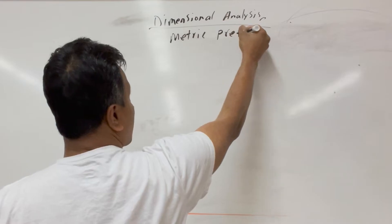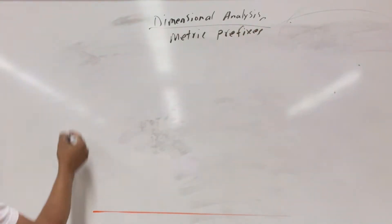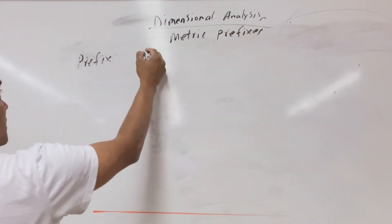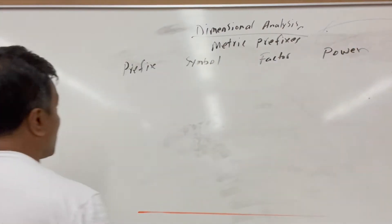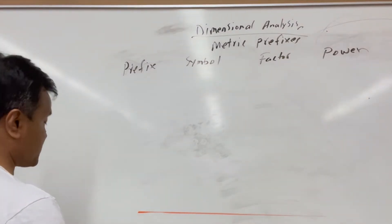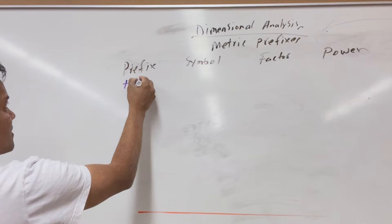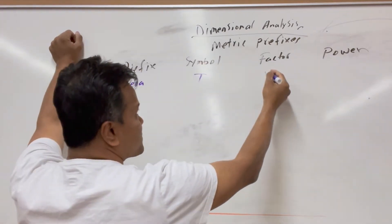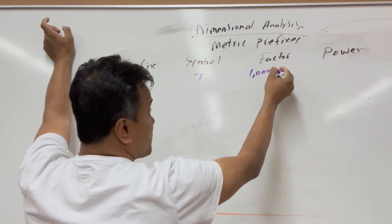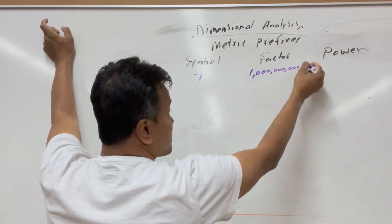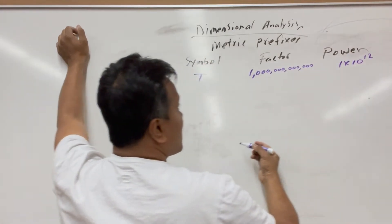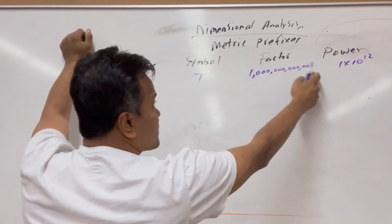Now let's talk about metric prefixes we are going to use in our physics class. There will be 13 prefixes. Starting with tera — symbol T, factor is 1 times 10 to the 12. Then giga — symbol big G, factor is 1 times 10 to the 9.